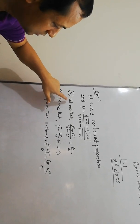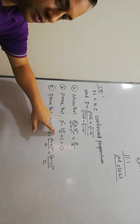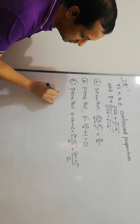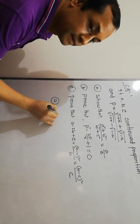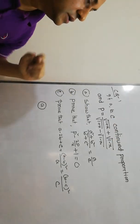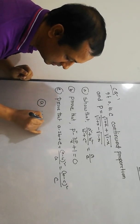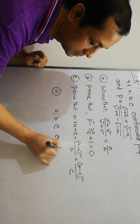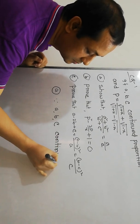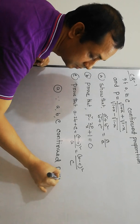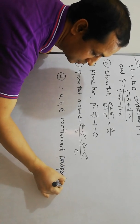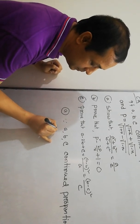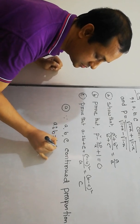Part A: Show that A² + B² / B² + C² equals A/C. Now I will start. Given that A, B, C are in continued proportion.